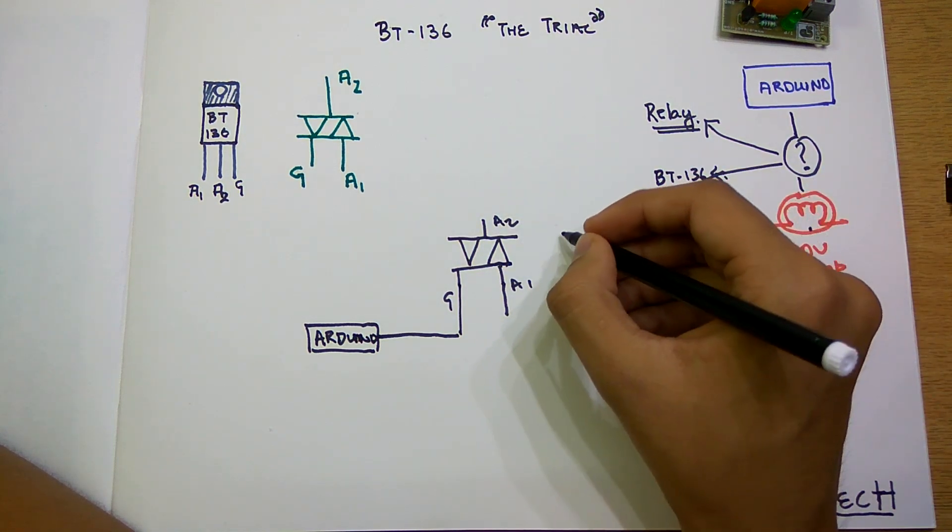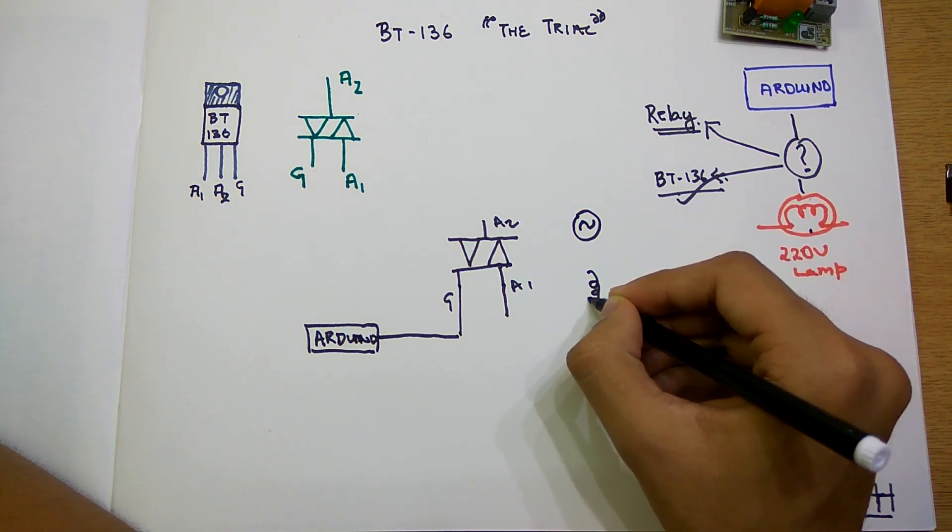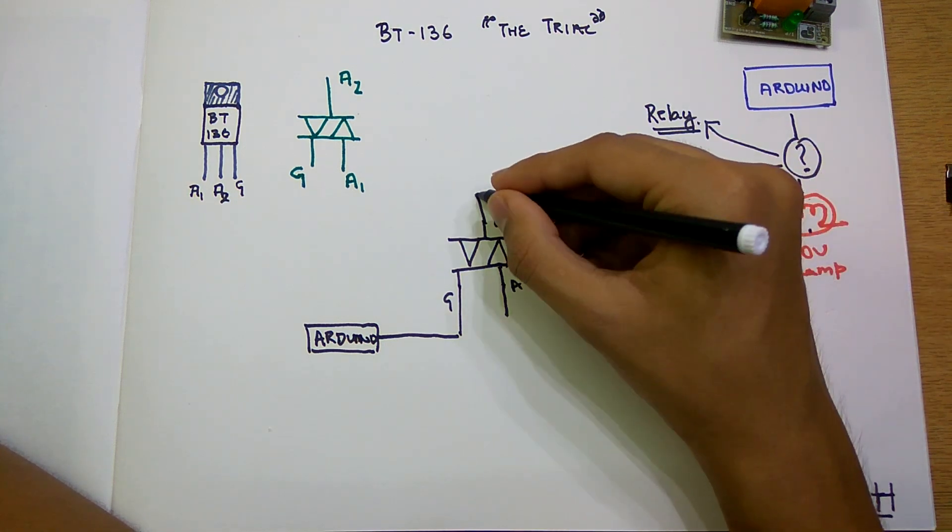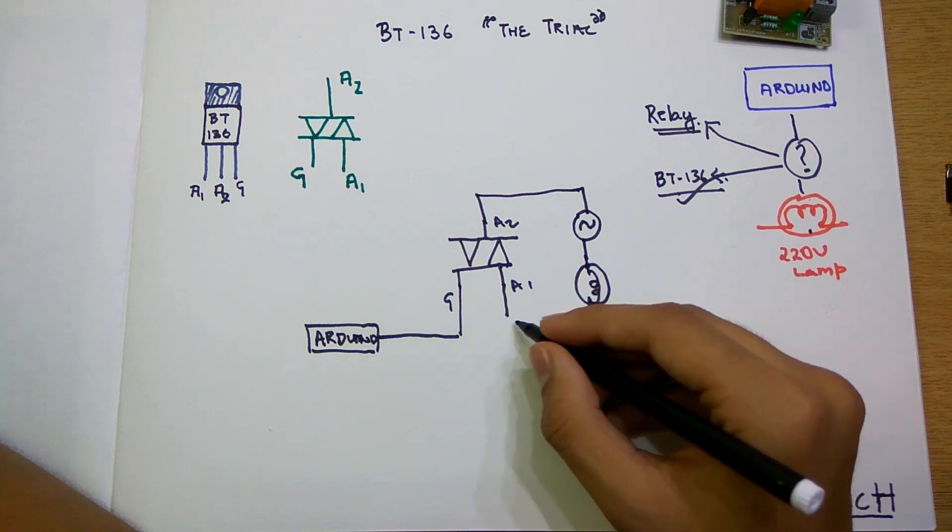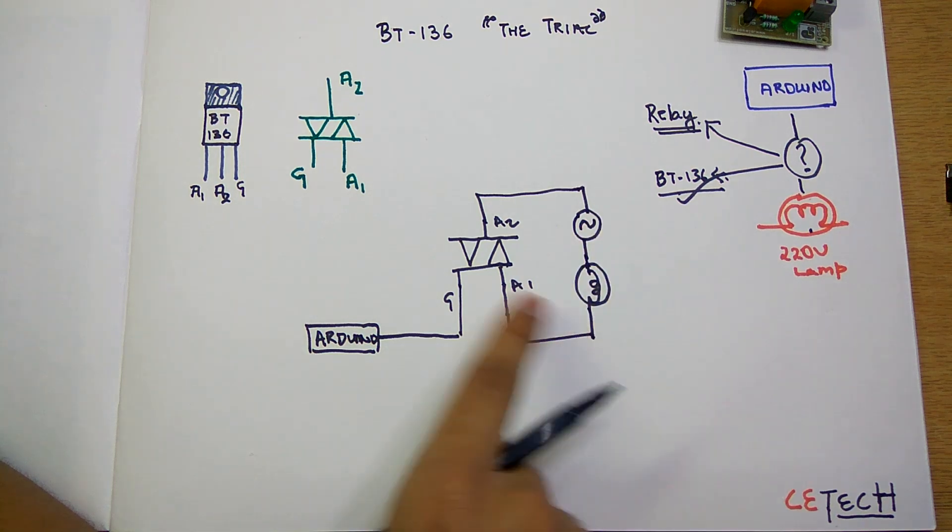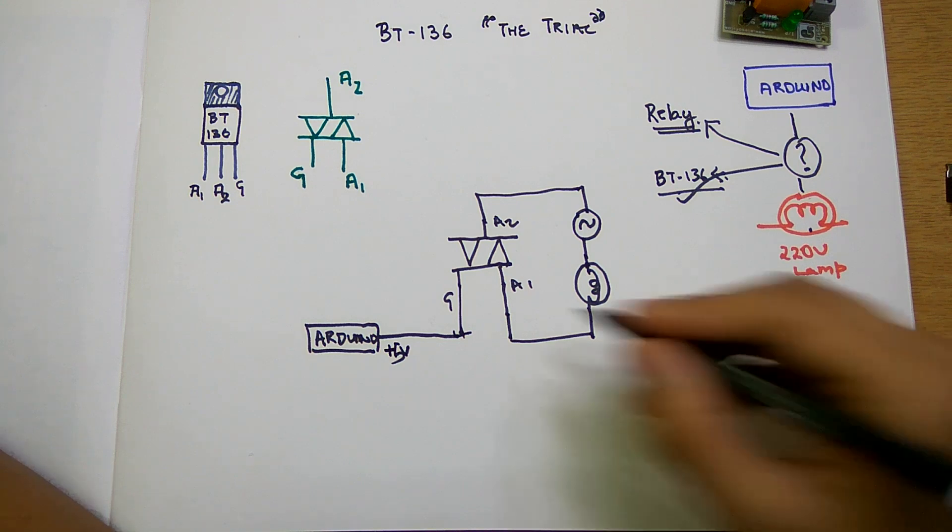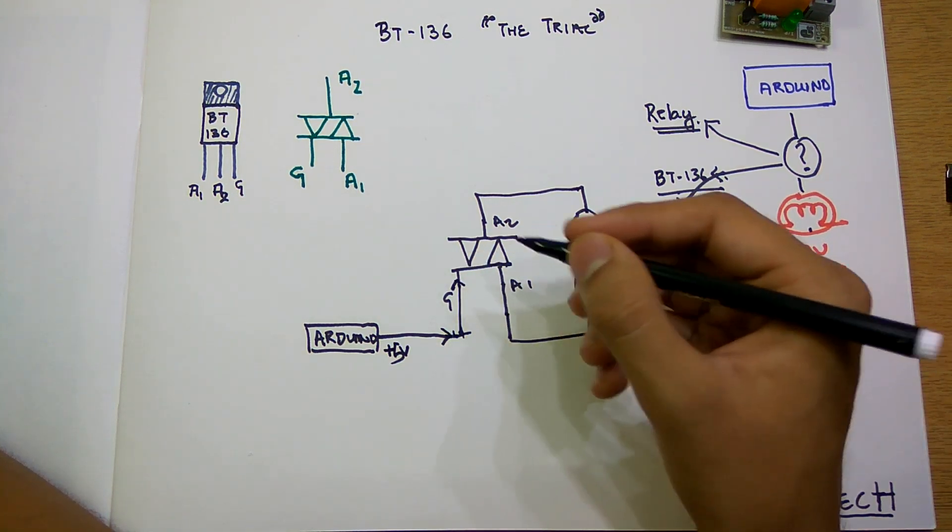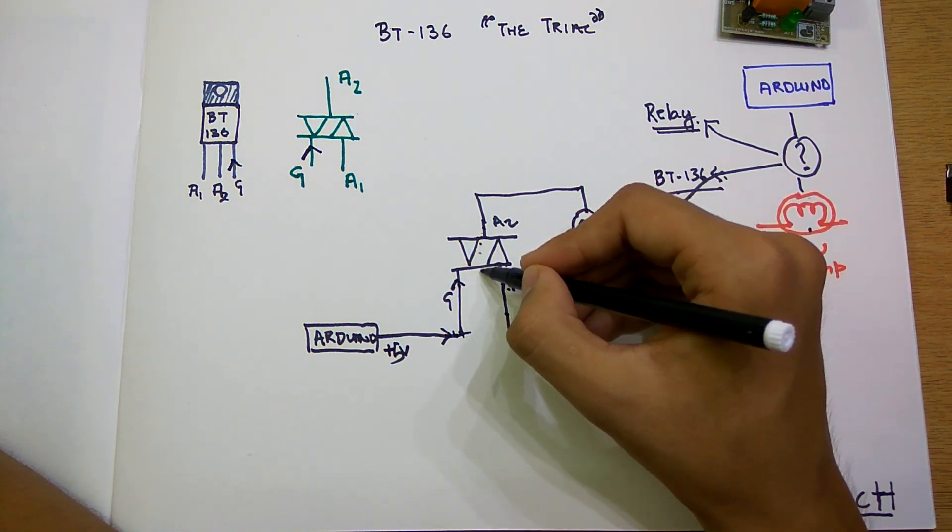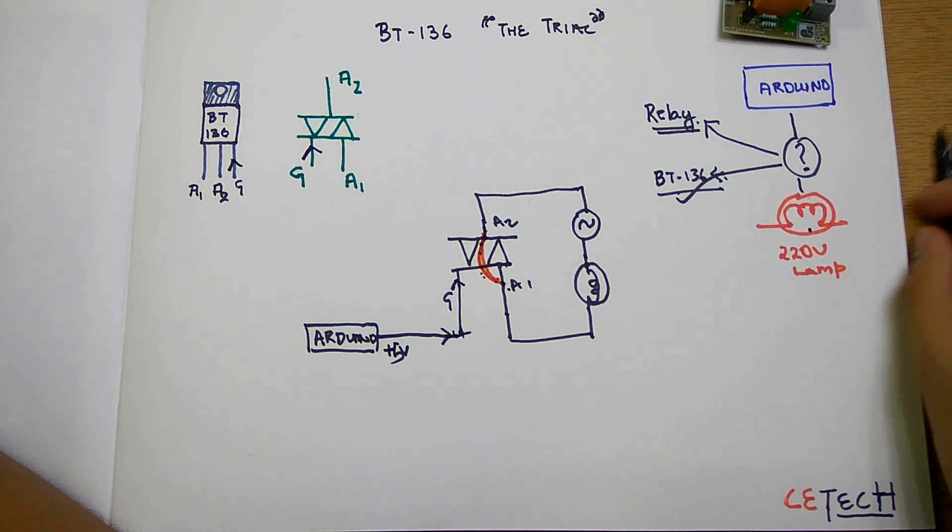Now the switching will occur in between A1 and A2. For example, we have an AC source right here and the lamp is here. We will connect the AC source one terminal to the lamp, the other terminal to probably A2, and the other terminal to A1. When the Arduino gives in plus 5 volts or some voltage, these two are connected and the current starts to flow.